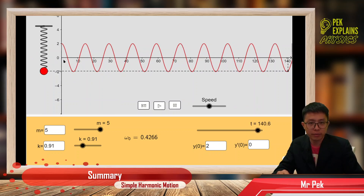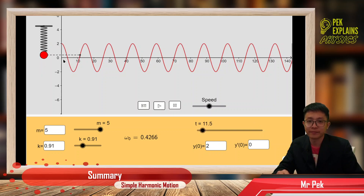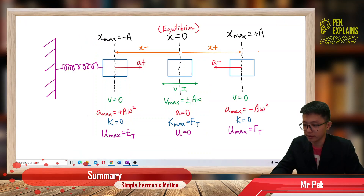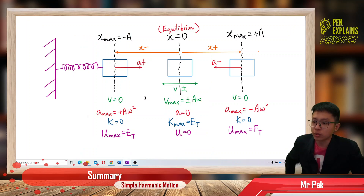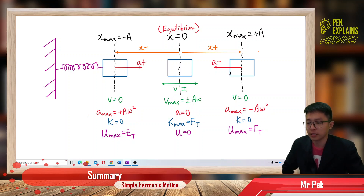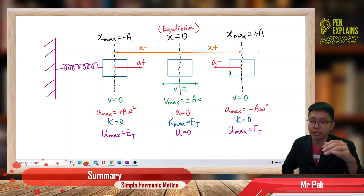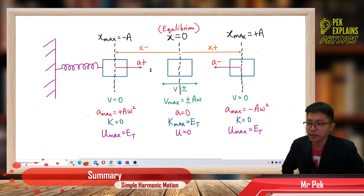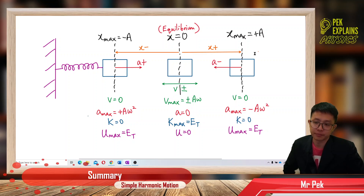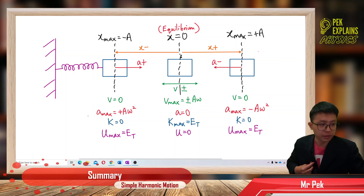At the equilibrium there is no extension and no compression. Now let's look at the notes. I've converted this spring-mass system to a horizontal oscillation — vertical and horizontal are the same. The center is the equilibrium, and at both ends it is the amplitude. At the center, x equals zero.